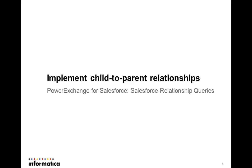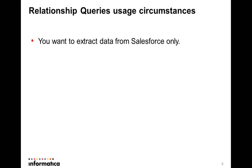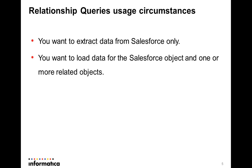We have seen how to implement child-to-parent relationship queries in Power Exchange for Salesforce. Now we will look at the circumstances under which such implementation can be done. One mandatory requirement is that the data must come from Salesforce alone, because the relationship query would work only in that case. A second mandate is to load data for a Salesforce object or its related objects. The objects must have a valid relationship path across themselves to be imported as related objects — so the objects have to be related to perform such a relationship query.